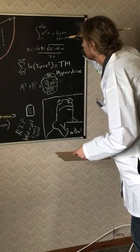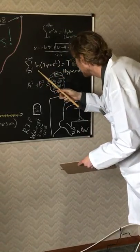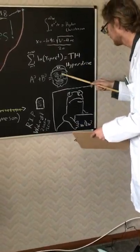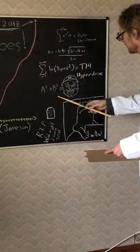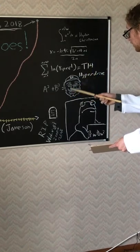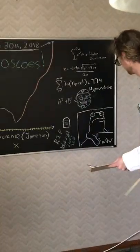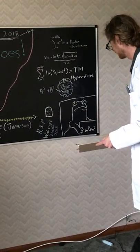We have here: e ln(yippee) equals the T-14 hyperdrive, a² + b² equals Waluigi. Or... but we already knew that. Wow, come to the show!